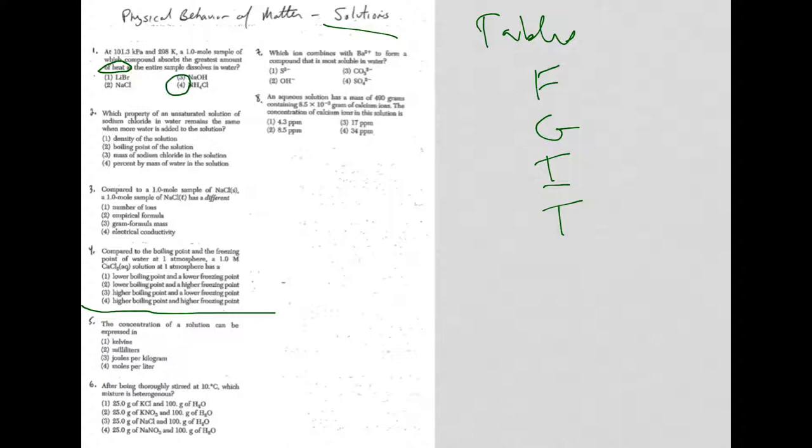Okay, so don't be afraid to look at the reference tables and go through them if you're really not sure. Question two, which property of an unsaturated solution of sodium chloride in water remains the same when more water is added? So I have a certain amount and now I'm adding more. Well, the density of the solution can't be the answer. Density is mass divided by volume. If I'm adding more volume, I'm changing the density.